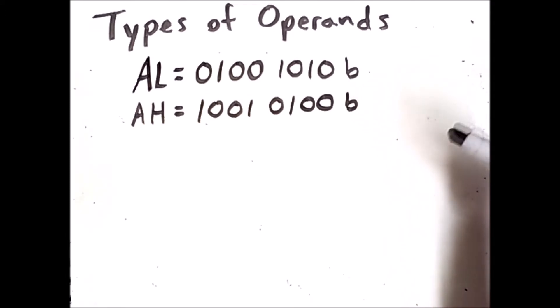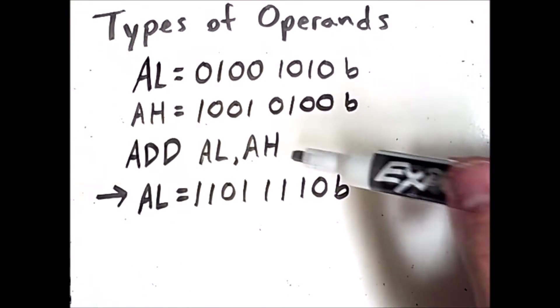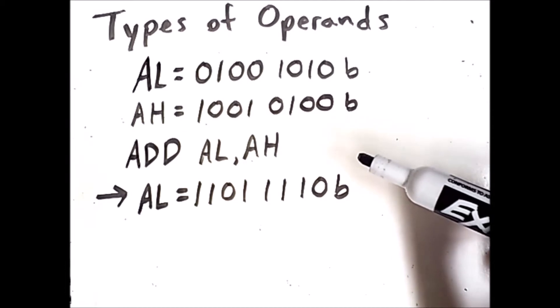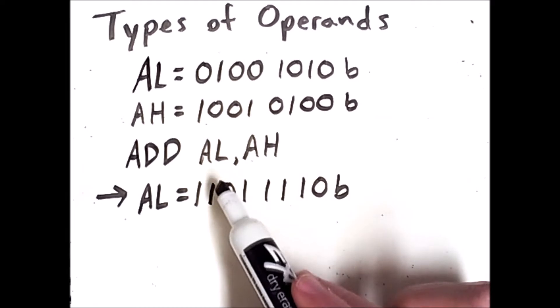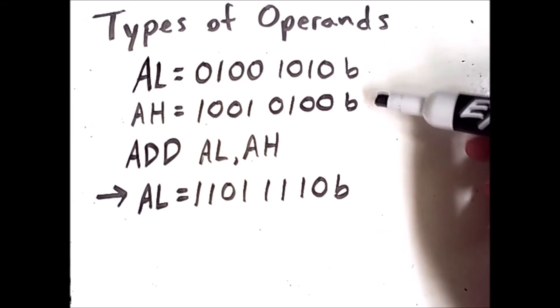If we do an add command, we would get a result like the following. Here I've done an add command that takes two operands, and we are going to store the result of the addition in the first of the two operands. So afterwards, the result in AL is this sequence of bits, the result of doing binary addition of those two numbers.